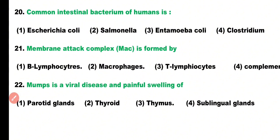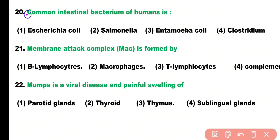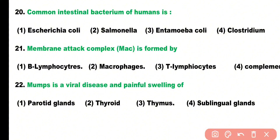Question number twenty: the common intestinal bacterium of humans is: Escherichia coli, Salmonella, Entamoeba coli, or Clostridium. Correct answer is option one — Escherichia coli is a common intestinal bacterium of humans.